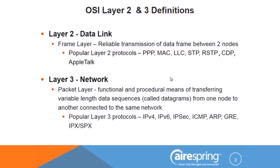Popular Layer 2 protocols include: PPP (point-to-point protocol), MAC addressing (media access control), link layer control, spanning tree, rapid spanning tree, and Cisco discovery protocols. I also threw in an old one from the 80s and 90s called Apple Talk — for those under 30, this isn't a new iPhone; it's an old protocol used between Macintoshes before Ethernet became popular.